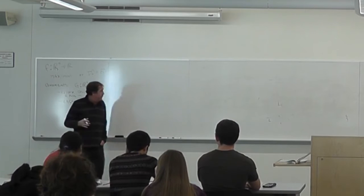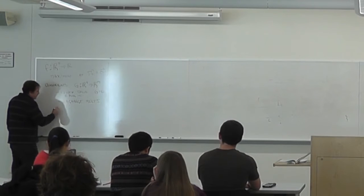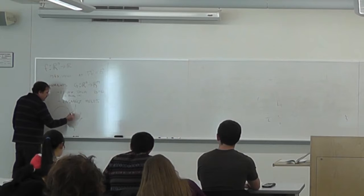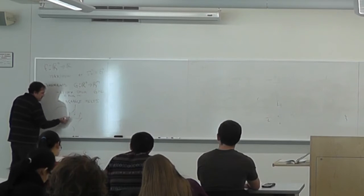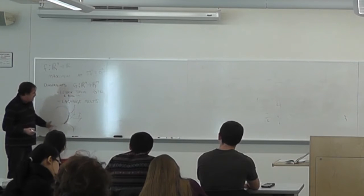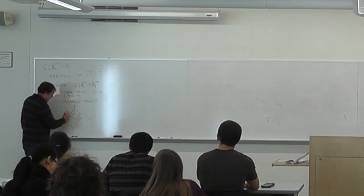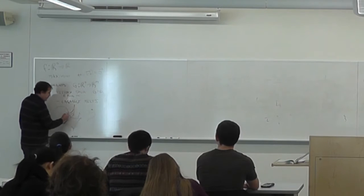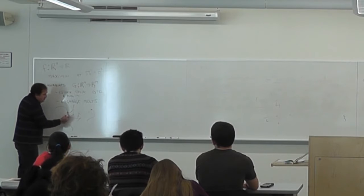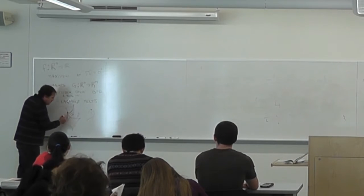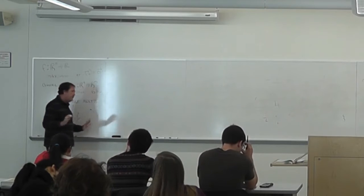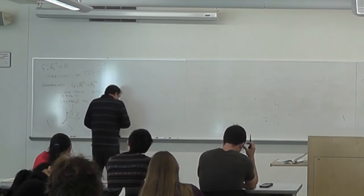So the Lagrange multiplier method — I'll draw it in two variables — says I have some function f, and my constraint g equals a constant means I'm looking at a level set. Either I solve and get a curve, and try to find the highest point on this curve, or I can use Lagrange multipliers, which tells me to look at where the gradient of f and the gradient of g align. They're two different ways of looking at the same problem.